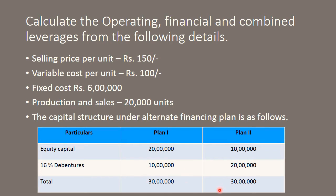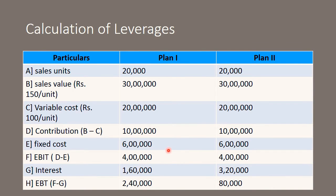The company has to be advised as to which plan to follow — Plan A or Plan B — based on the leverages. Let us move to the solution. For calculation of leverages, we need contribution, EBIT, and EBT. Sales units are 20,000 for any plan. Sales value is 150 rupees per unit, so 150 multiplied by 20,000 = 30 lakh rupees for Plan 1 as well as Plan 2.